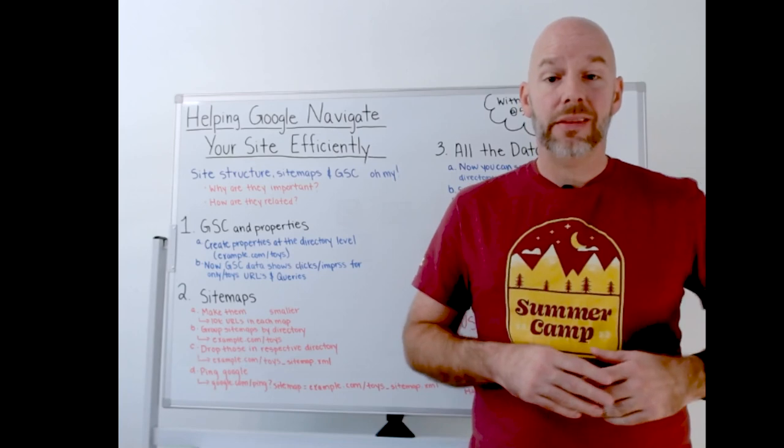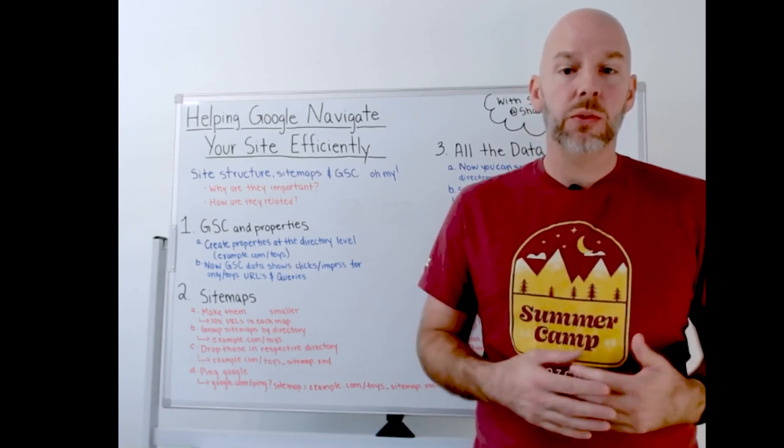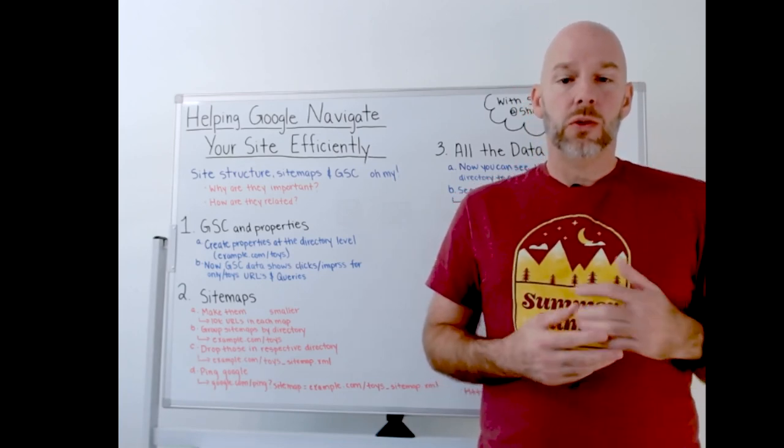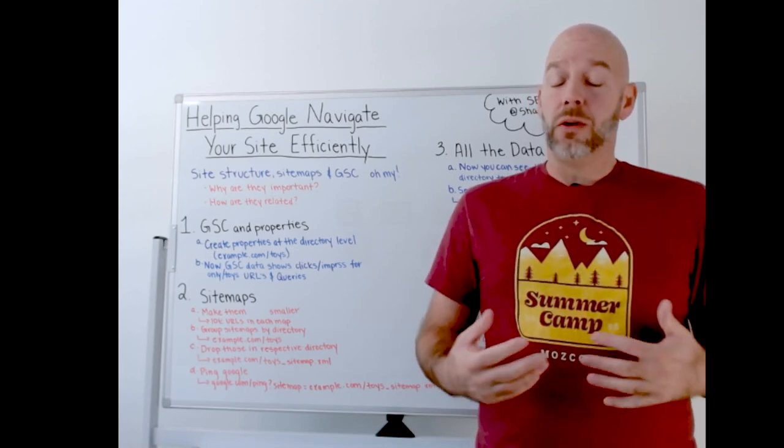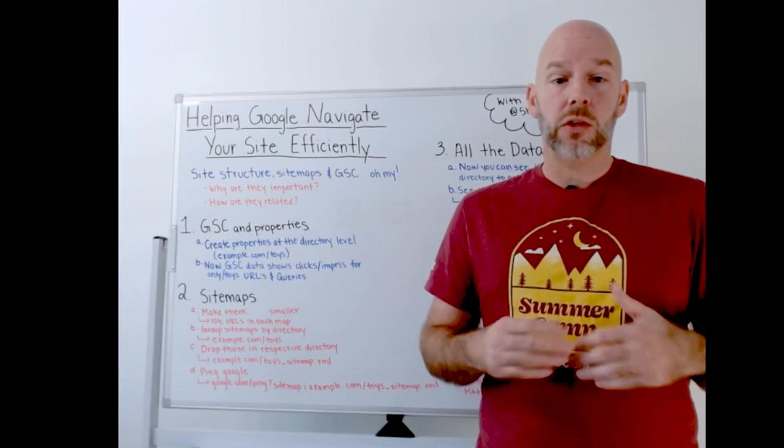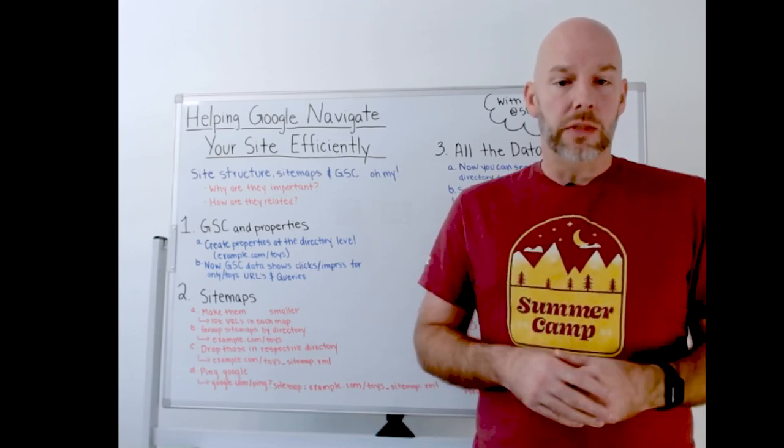Your site maps are kind of a shopping list, or a to-do list, if you will, of the URLs you want to make sure that Google is crawling whenever they see your site. Now, Google isn't always going to crawl those URLs, but at least you want to make sure that they see that they're there. And that's the best way to do that.